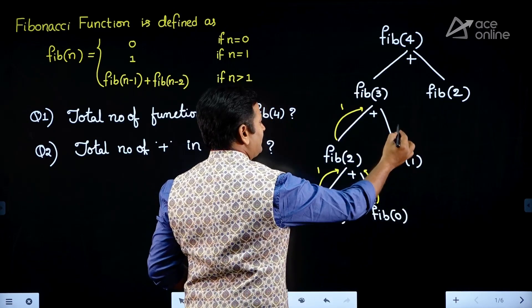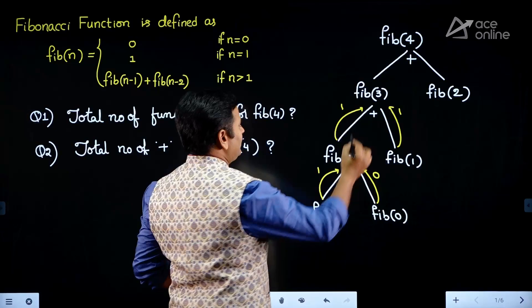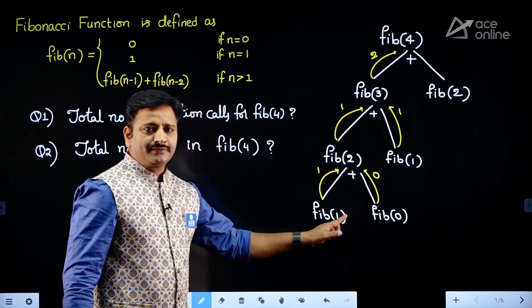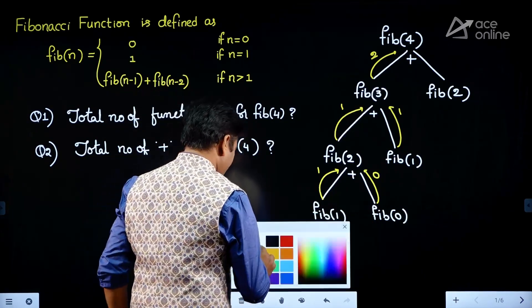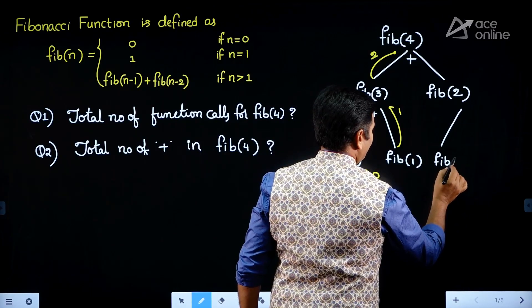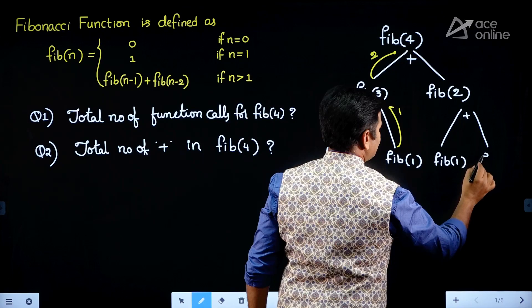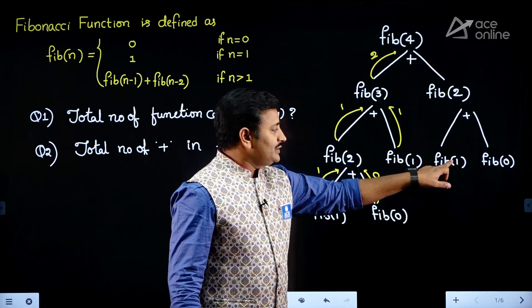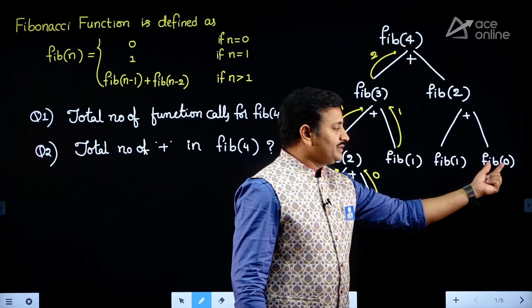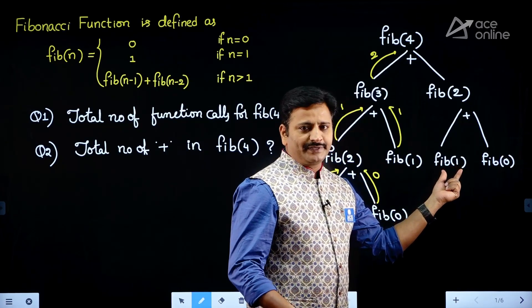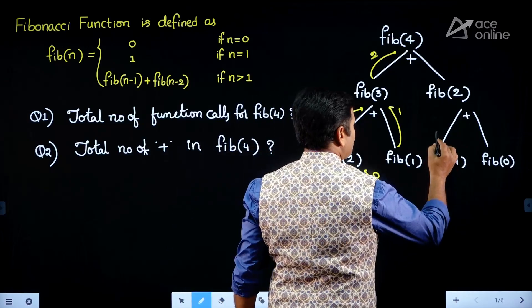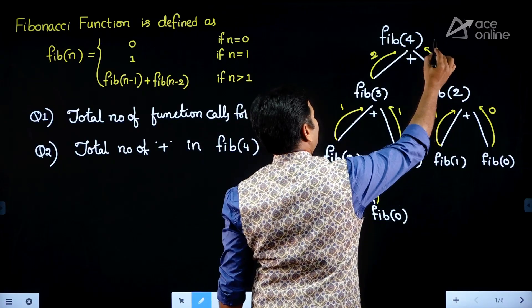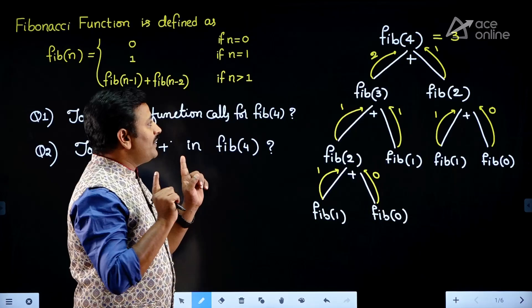When we call Fib of 1 it returns 1 based on the base condition, so 1 plus 1 gives 2. Afterwards, Fib of 2 again splits into Fib of 1 plus Fib of 0. There are two base conditions: n equals 0 is the first, n equals 1 is the second. Fib of 1 returns 1 and Fib of 0 returns 0, so 1 plus 0 equals 1, and 2 plus 1 equals 3. Therefore, Fibonacci of 4 equals 3.